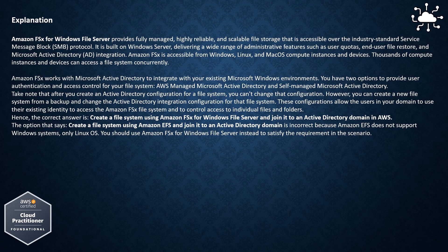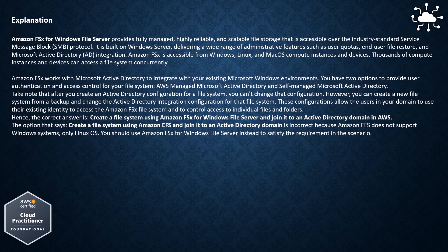After you create an Active Directory configuration for a file system, you can't change that configuration. However, you can create a new file system from a backup and change the Active Directory integration configuration for that file system. These configurations allow users in your domain to use their existing identity to access the Amazon FSx file system and control access to individual files and folders. Hence, the correct answer is: create a file system using Amazon FSx for Windows File Server and join it to an Active Directory domain in AWS.